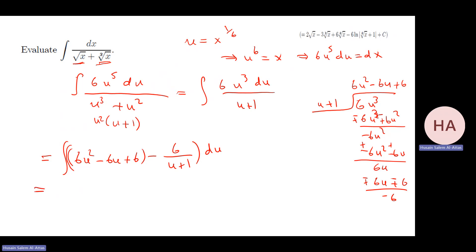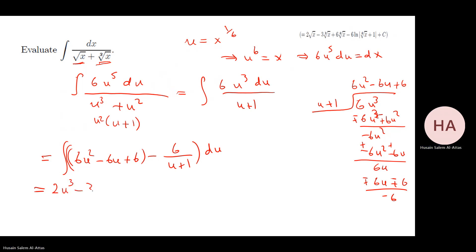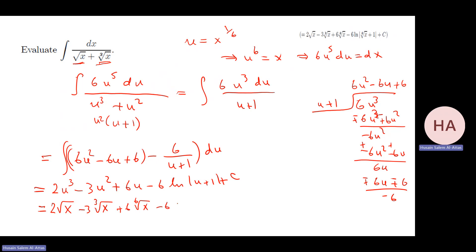Now integrate term by term: ∫(6u² - 6u + 6 - 6/(u+1))du = 2u³ - 3u² + 6u - 6 ln|u+1| + C. Substituting back u = x^(1/6): the terms become 2√x (u³ = x^(1/2)), 3∛x (u² = x^(1/3)), 6·x^(1/6) (the sixth root of x), minus 6 ln|1 + x^(1/6)| + C.